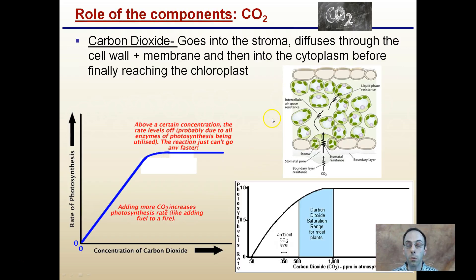So looking specifically at the first one, carbon dioxide is important. Now carbon dioxide enters through the stomata of the leaf, and it's got to make a little bit of a journey to get to where it's needed to be used. First, it's going through the stroma, then it's diffusing through the cell wall, and then the membrane, and then to the cytoplasm before finally reaching the chloroplast. So there is a little bit of a process that is required.